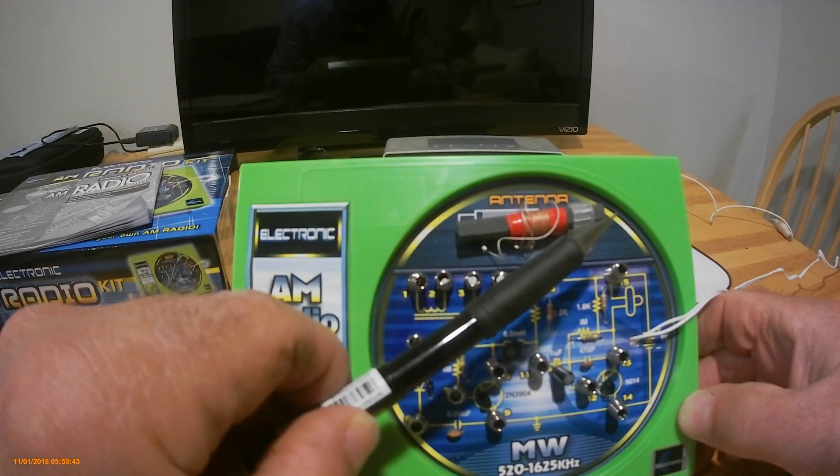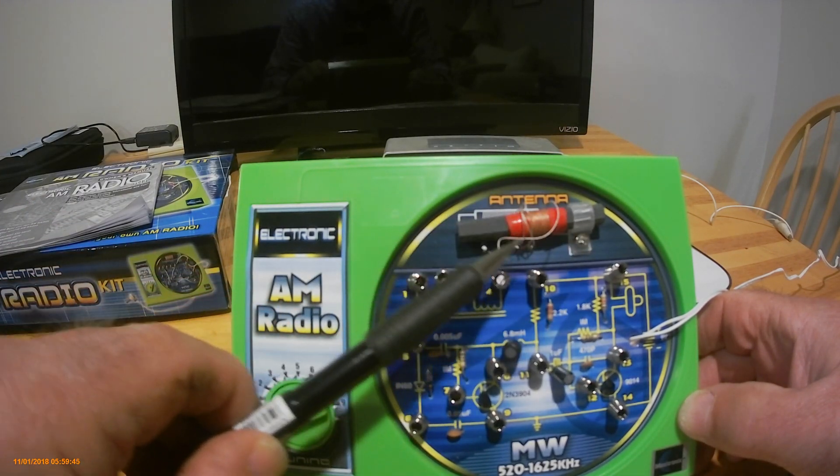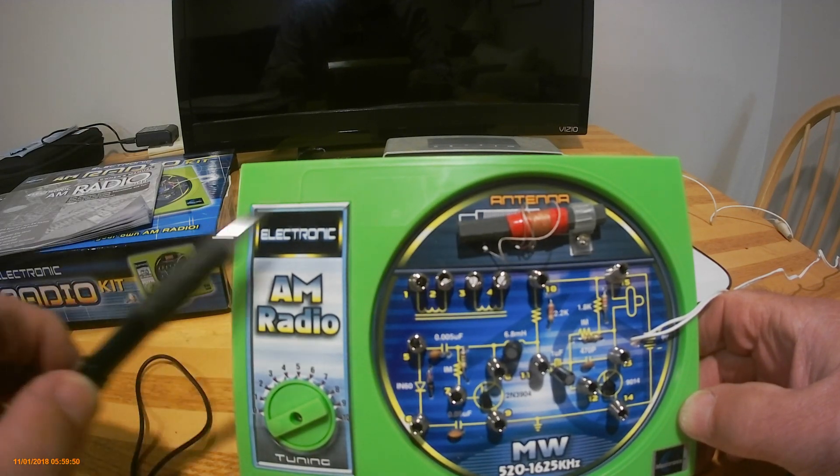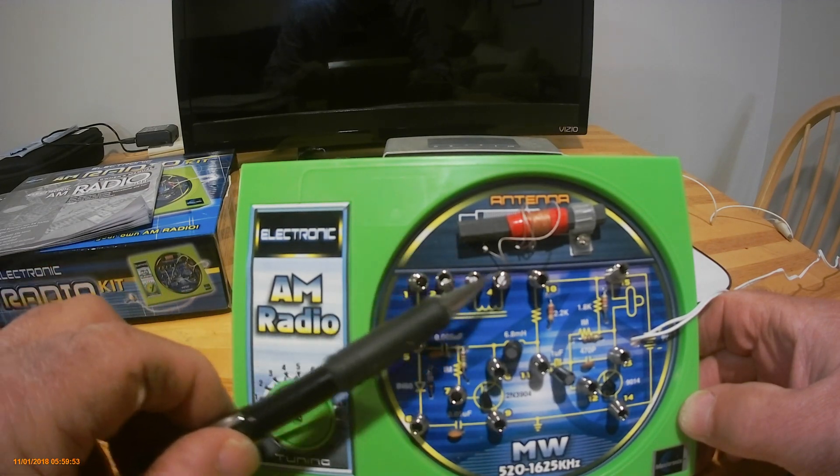Up here, you have the antenna bar. It has four wires hanging off of it. The wires are color-coded, and the instructions tell you exactly what wire to connect to what pin.